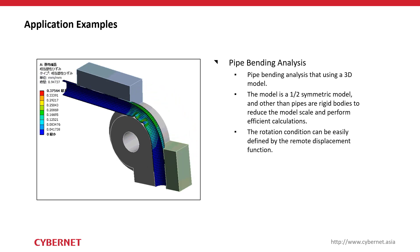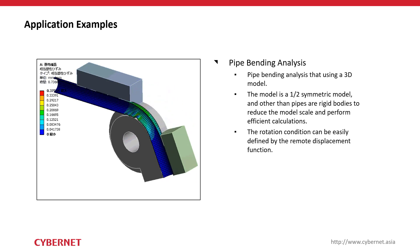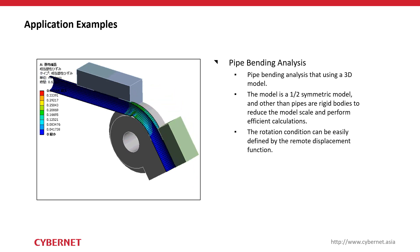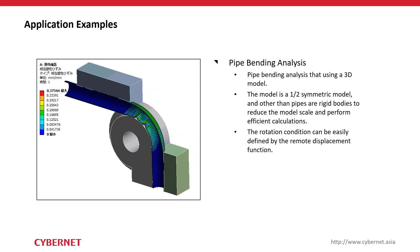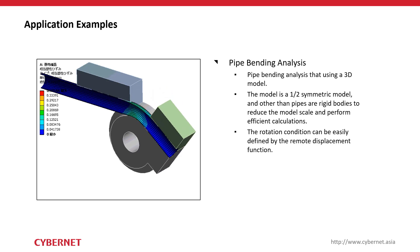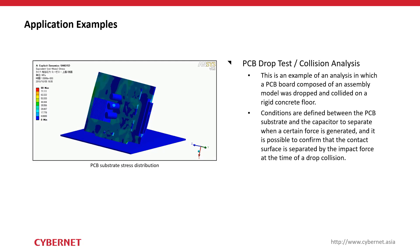Another application is pipe bending analysis — evaluating stresses and defects such as wrinkling as the pipe goes through the bending process. In this case, only half the pipe and die are modeled by taking advantage of symmetry. In ANSYS Mechanical you can define a symmetry plane, run the simulation, and get results just as accurate as a full model analysis — cutting simulation time in half.